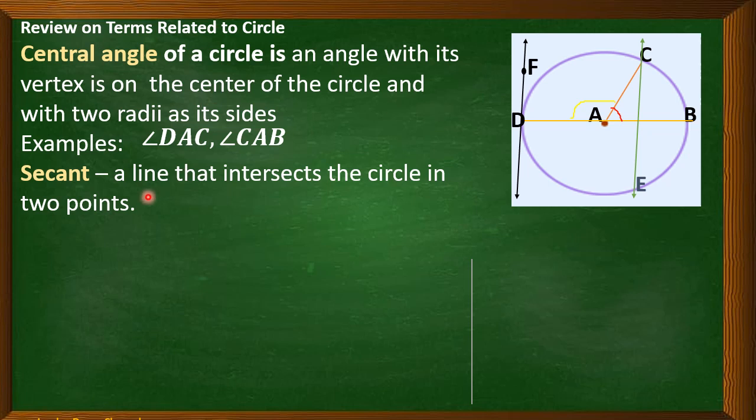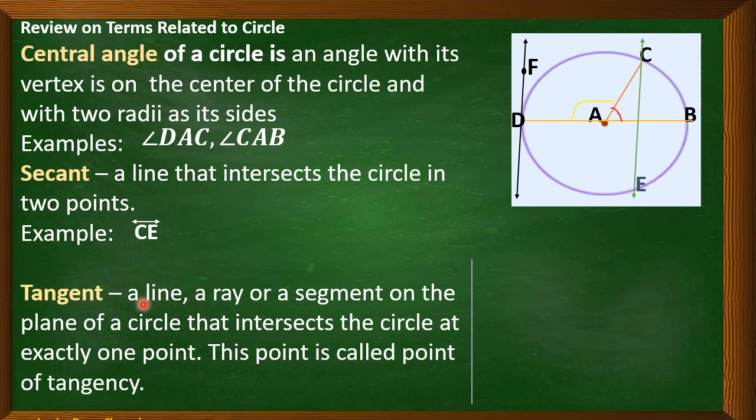Next, we have secant. This is a line that intersects the circle at two points. In our figure, what is our secant? Our secant here is line CE. The symbol at the top is a line. Next, tangent. Tangent can be a line, a ray, or a segment on the plane of a circle that intersects the circle at exactly one point. This point is called point of tangency. From our figure, we have here a tangent line. Our tangent line is line DF. It intersects at point D, and point D is actually the point of tangency.